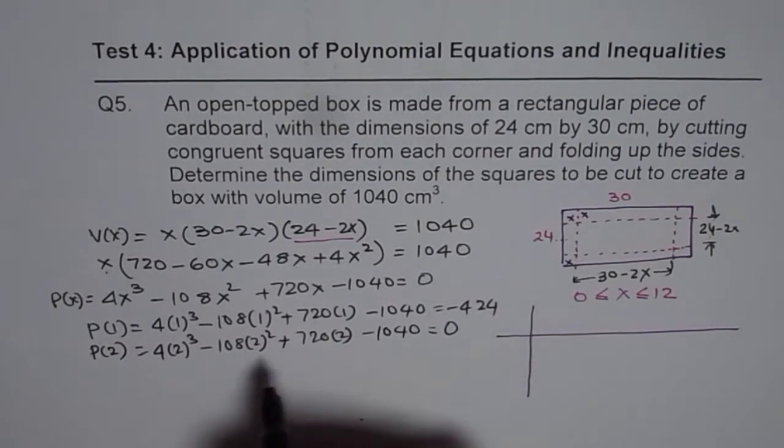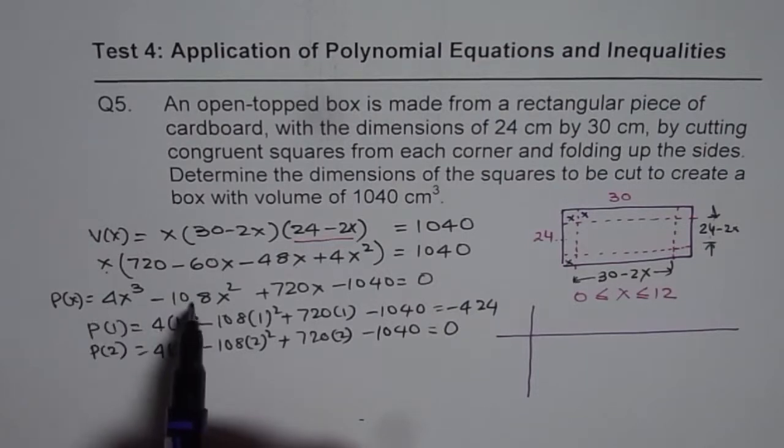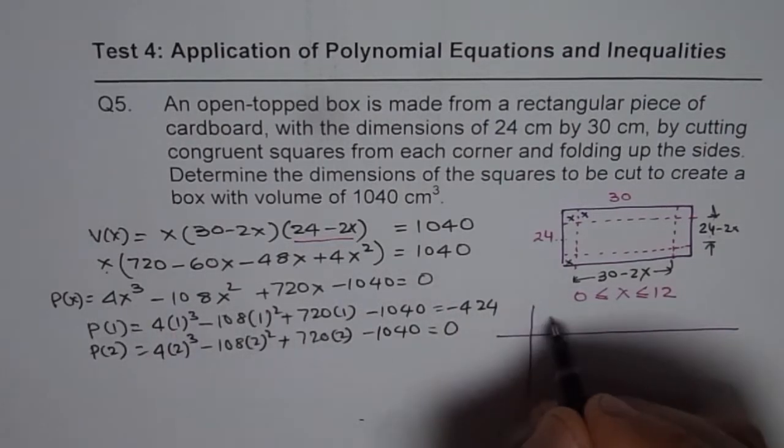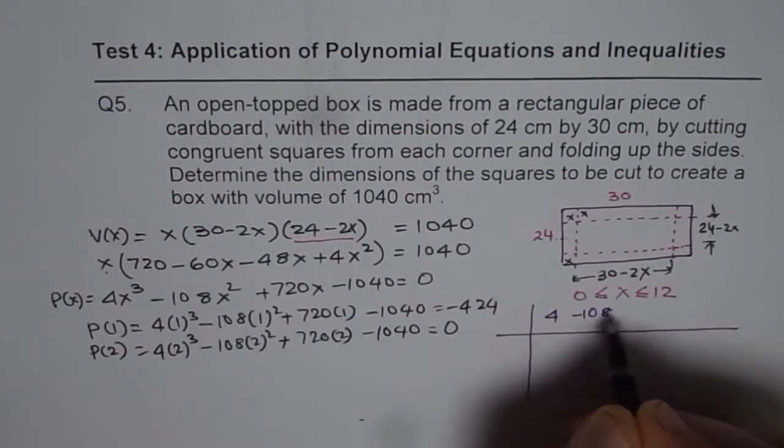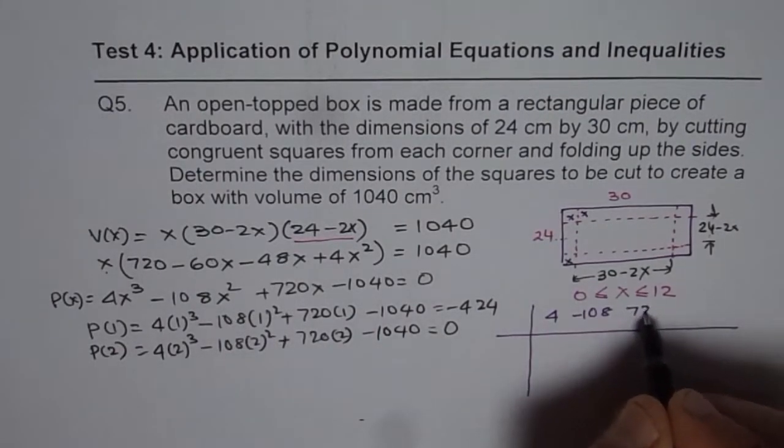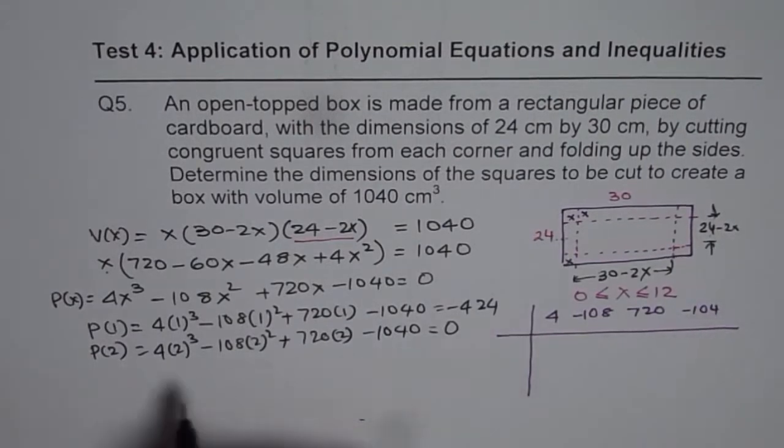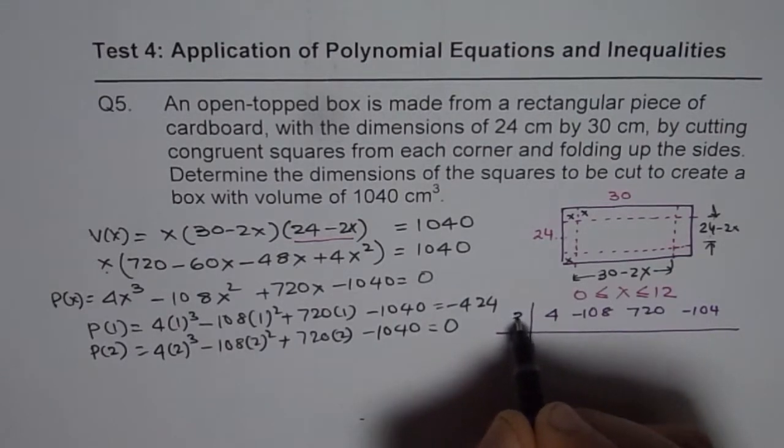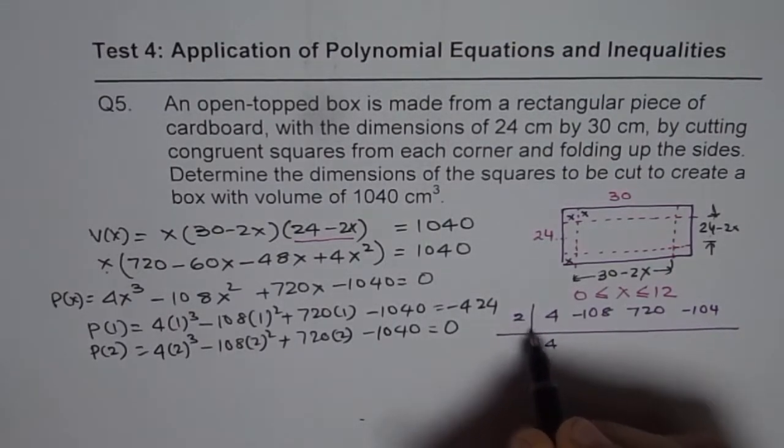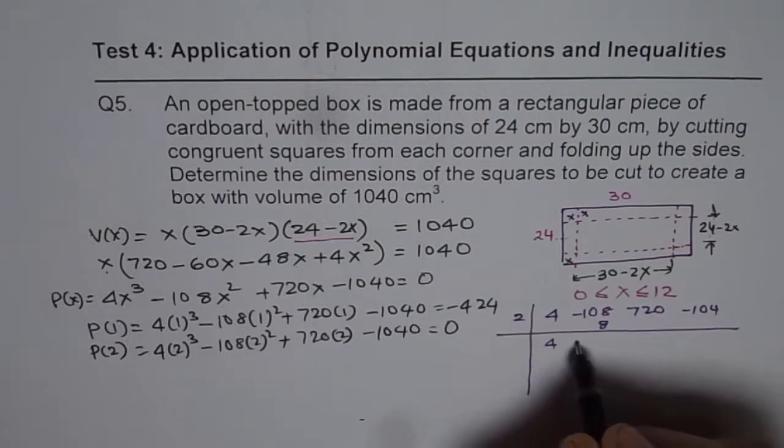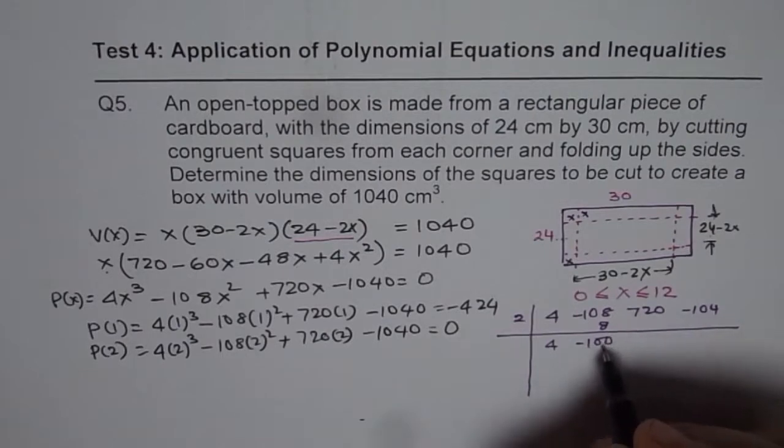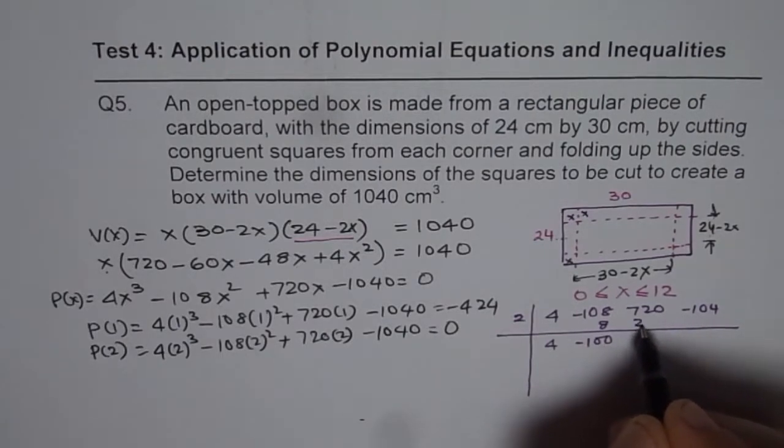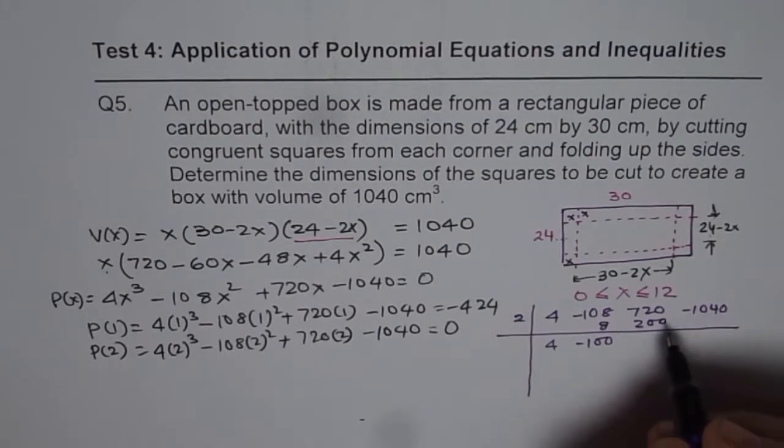So, we found that 2 is one of the solutions. Now, let me write down the coefficients of this equation, which is 4 and then minus 108, 720 and minus 1040. And since 2 is one of the dimensions, we can divide this by 2.